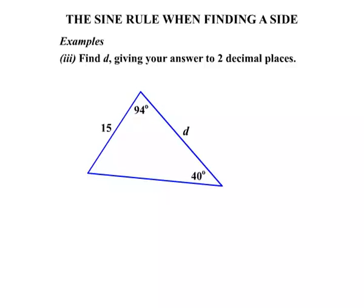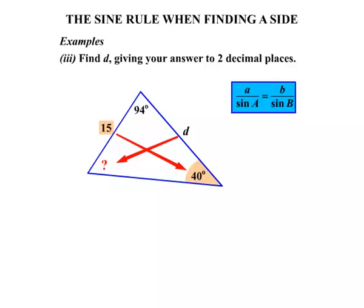Our third and final example. We need to find d giving your answer to two decimal places. There's our sine rule again. Now d, let's see what that matches up with. Well it matches up with an angle there that's not marked, is it? We don't know what it is yet. We can find it, but at the moment we'll need to get back to that. What about anything else? The 15 matches up with the 40 degrees, certainly. So we know that match up for sure.